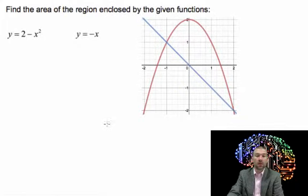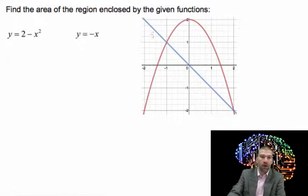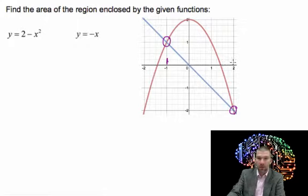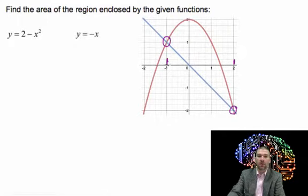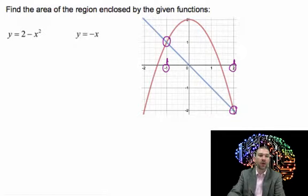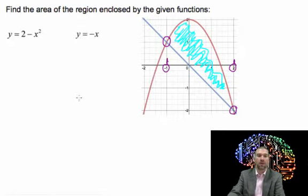Sometimes when you're looking for the area enclosed by two functions, the problem doesn't give you where you're integrating from. So if we want to find the area between these two curves, we need to find the x-values for the two intersection points, because when you integrate, you're integrating along the x-axis. From the graph it's pretty obvious it's negative one to two, but what if you can't tell, or it falls into some hard-to-read spot?